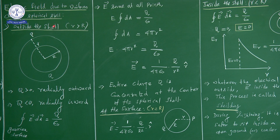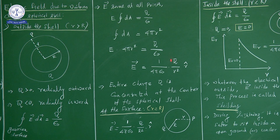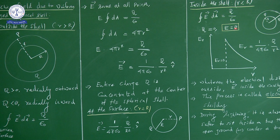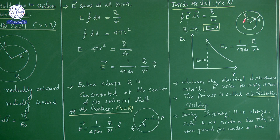Let's summarize the three cases for a spherical shell. First, outside the shell, the electric field is E vector equals 1 divided by 4 pi epsilon naught into Q divided by R squared into r-cap, as if the charge is concentrated at the center. Second, at the surface, the electric field uses r equals R in the same formula. Third, inside the shell, the charge enclosed is zero, so the electric field is zero.